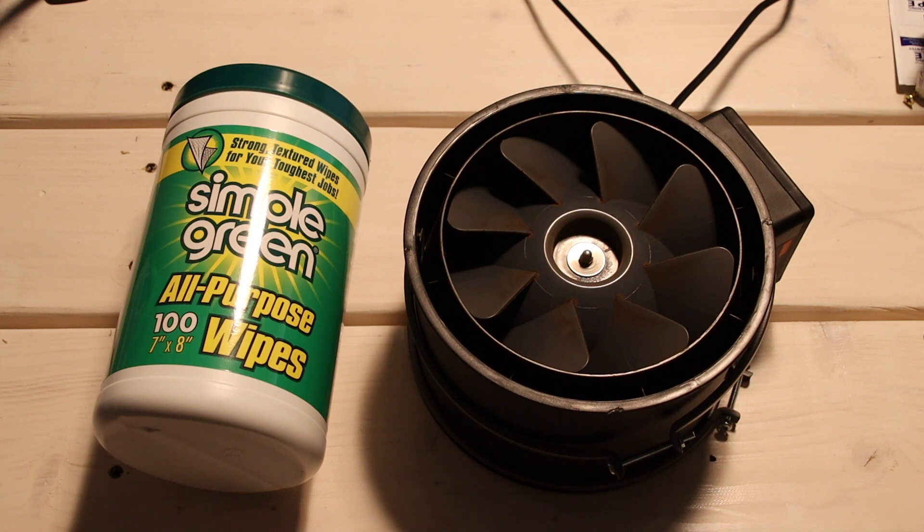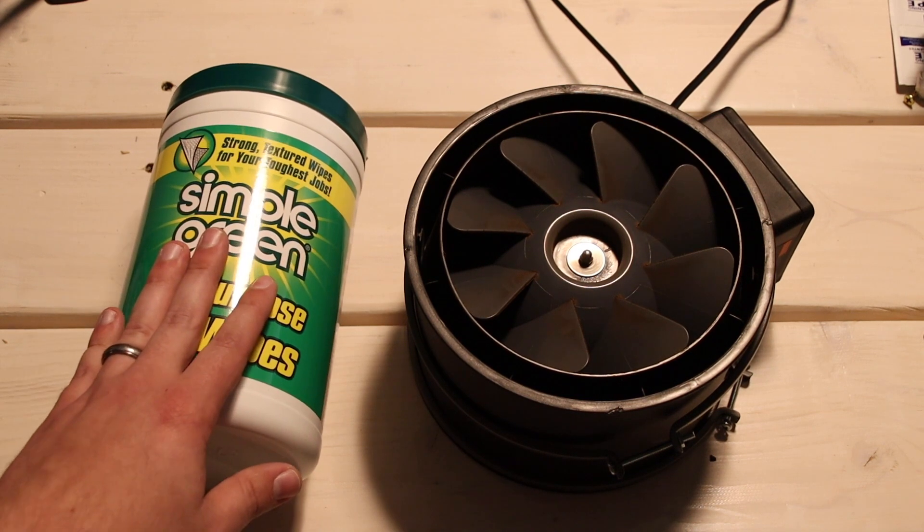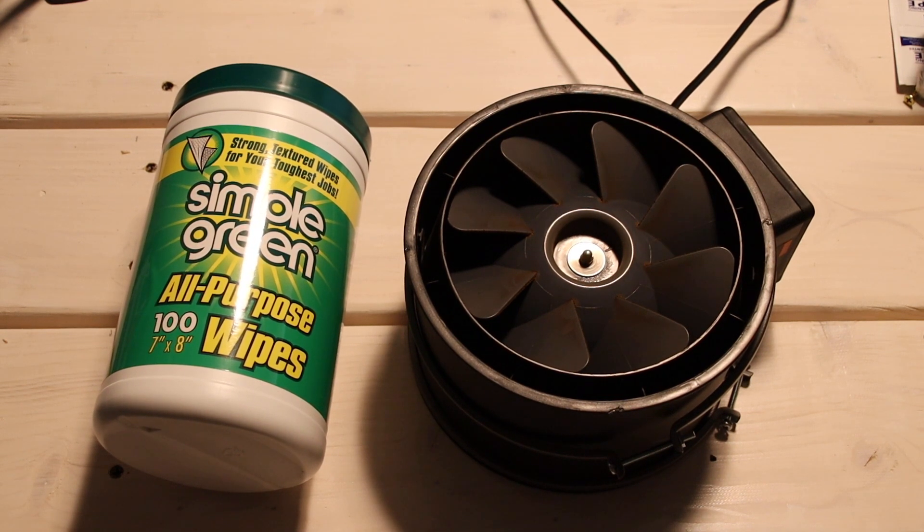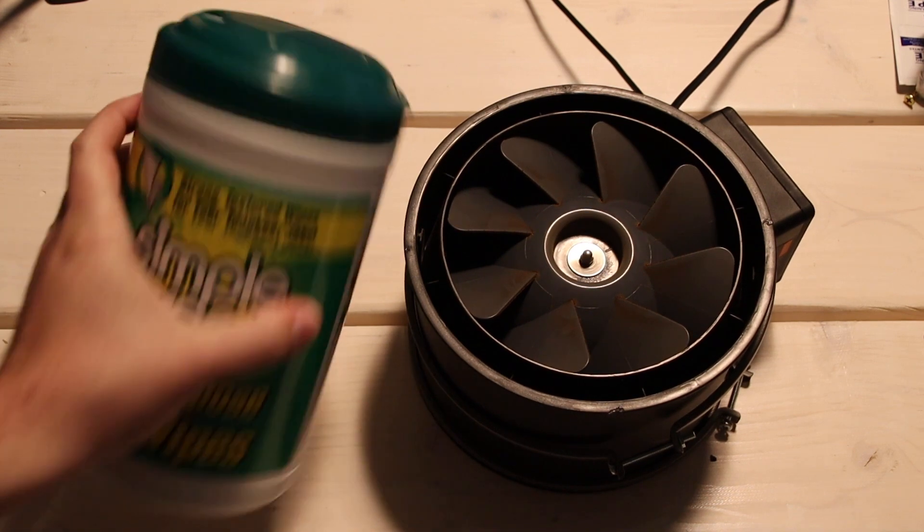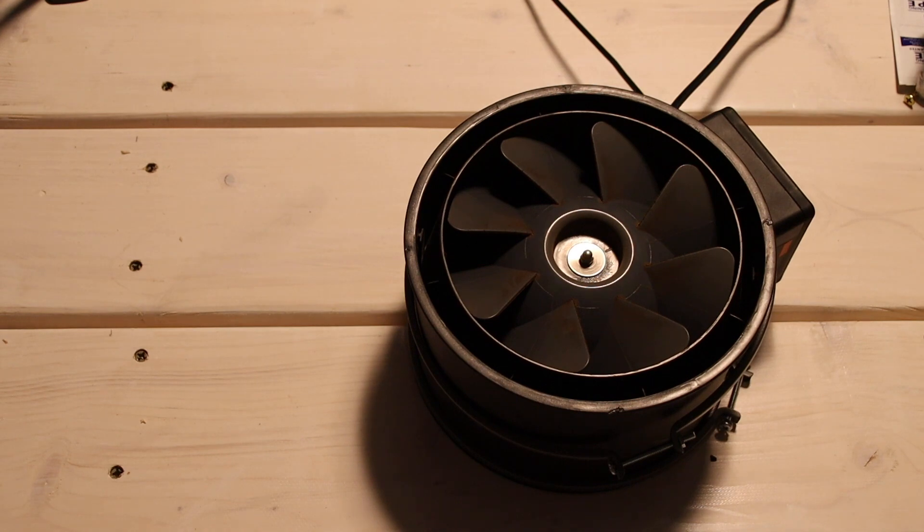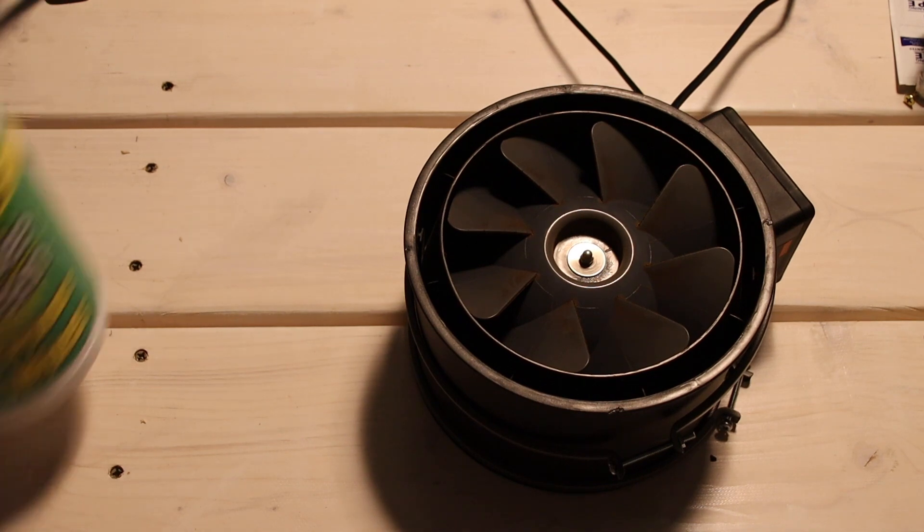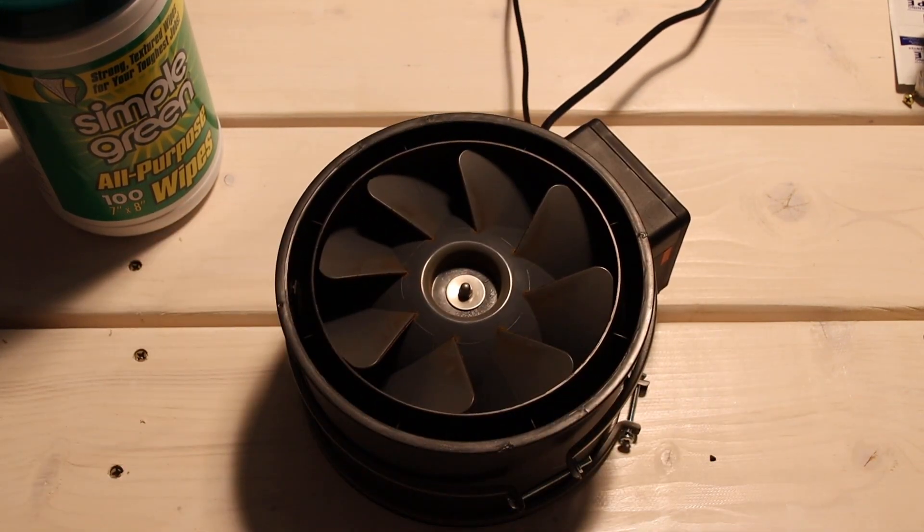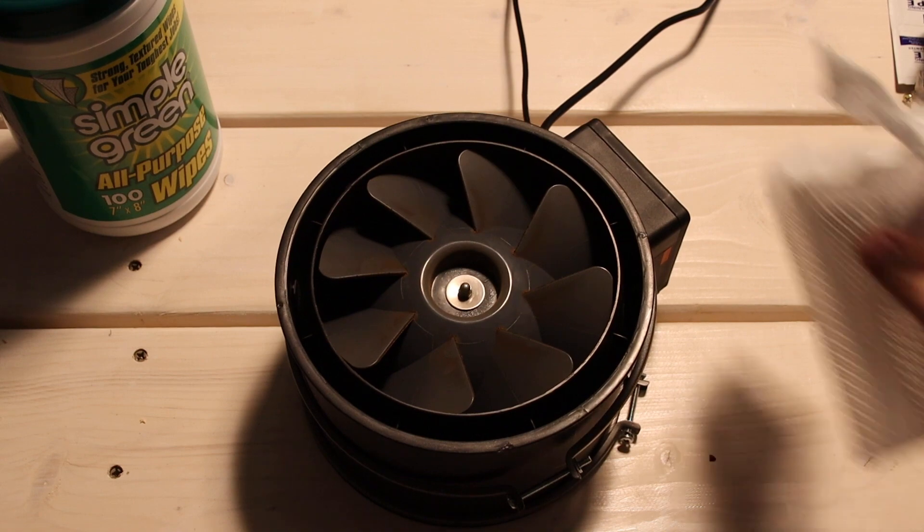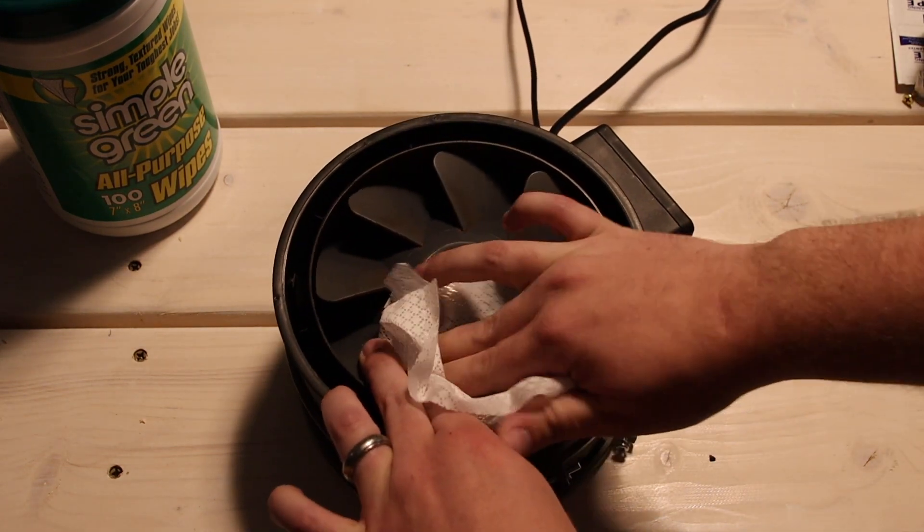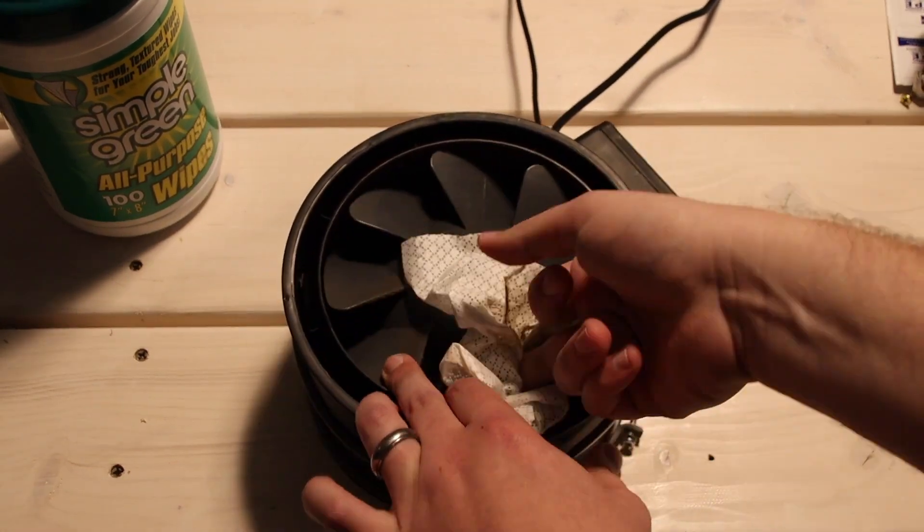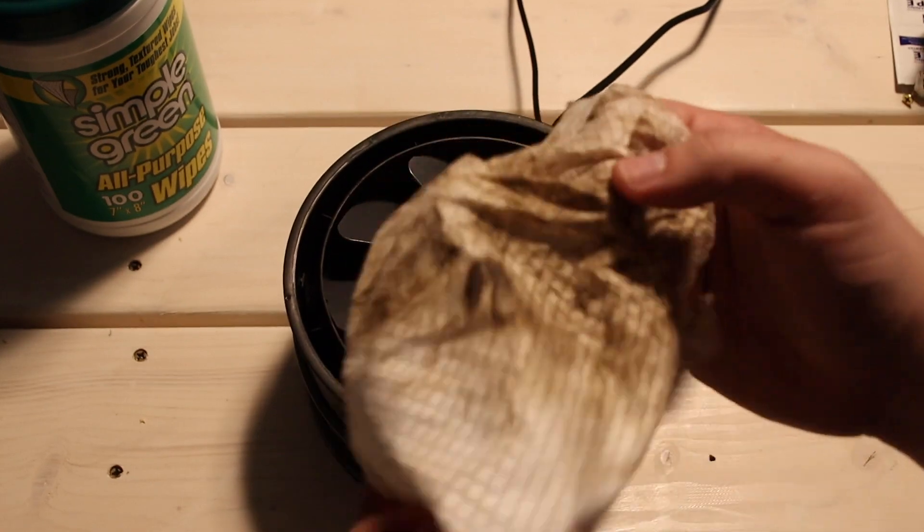So as you guys can see, I'm going to go ahead and use some Simple Green wipes here. And if you don't have Simple Green wipes, you can just use regular Simple Green and a piece of paper towel. But this is what I'm going to be using here. So let me go ahead and pull this out, and then we'll wipe this down here. And it's kind of hard to see on camera, and I've got some poor lighting in this room here. But all we're going to do is just wipe each blade down here really quick.